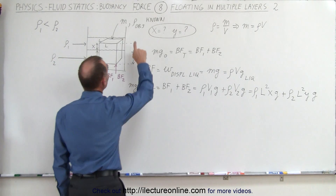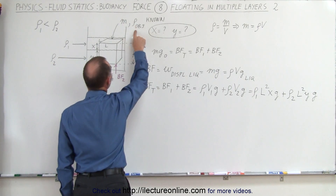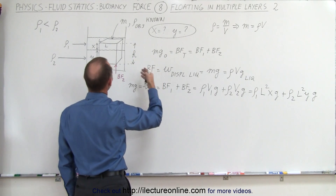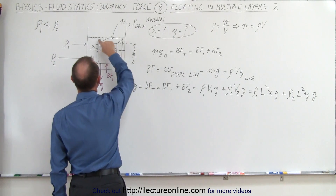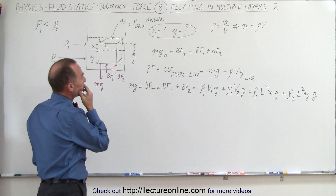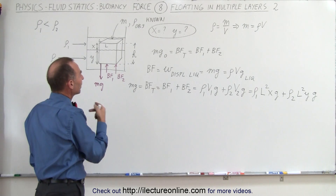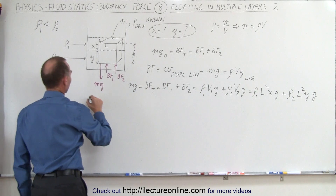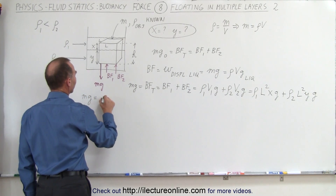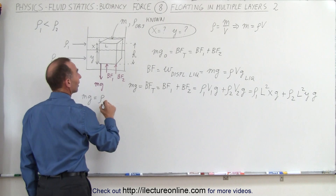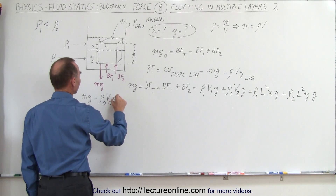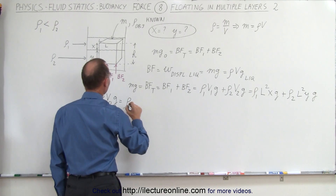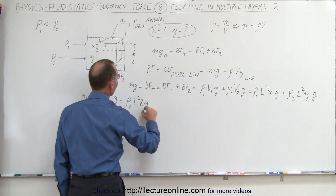Now notice that we know the mass of the object, the density of the object, and we know the volume of the object. The volume of the object would be l² times h. So what we can do is write the mass in terms of the density and the volume. In other words, mg of the object can be written as the density of the object times the volume l²h times g.